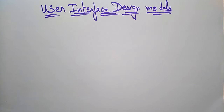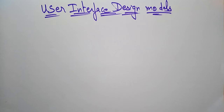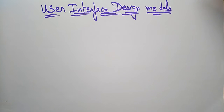Coming to the next topic: user interface design models. In the previous video I explained about the four design models — the user model, design model, mental model (system perceptions), and the implementation model. These are the four different design models used for analyzing and designing a user interface. Now let us see what this user interface analysis and design is.